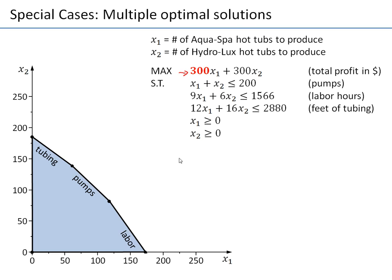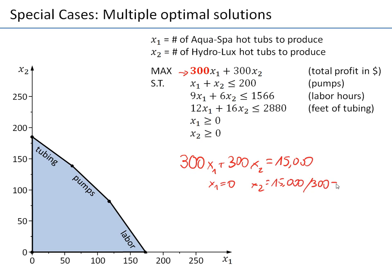Let's assume some value for the objective function. So let's say 300x₁ plus 300x₂ equals 15,000, because it's easy to divide 15,000 by 300. So if x₁ is 0, then x₂ will be 15,000 over 300, which equals 50. Similarly, if x₂ equals 0, then x₁ will also be 50. So we have those two points: (0, 50) and (50, 0). We can draw this level curve for 15,000.